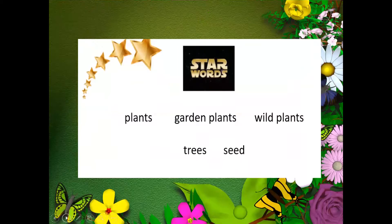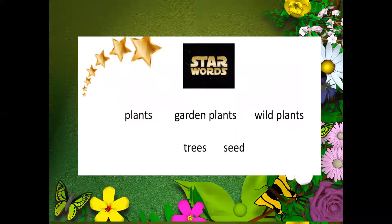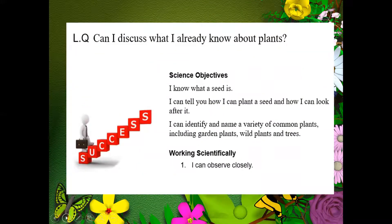Let's start this lesson by looking at our star words. My turn, your turn. Plants. Garden plants. Wild plants. Trees. Seed. Your learning question today is: can I discuss what I already know about plants? Your steps to success are to know what a seed is, to tell how I can plant a seed and how I can look after it, and to identify and name a variety of common plants, including garden and wild plants, as well as trees. Your working scientific skill is to observe closely.